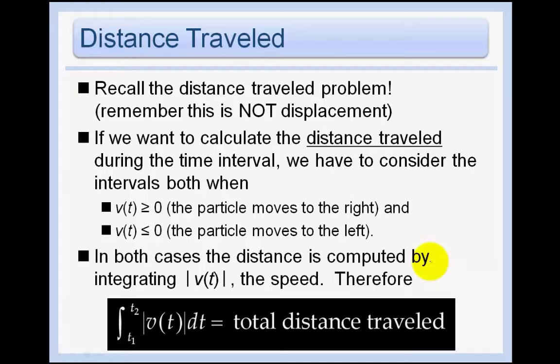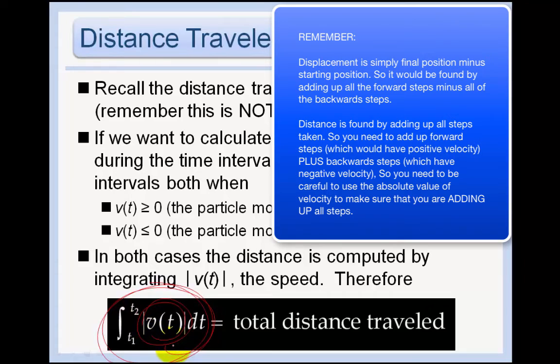Recall that the distance traveled is not the same as displacement. If we want to calculate the distance traveled during the time interval, then we have to consider the intervals when it's moving forwards and backwards. And we've done this a bunch of times. But an easy way to now think of it, now that we know formally the antiderivative and the notation, what we want to do is we want to take the absolute value of velocity, take the antiderivative of the absolute value of velocity, because basically what you want to do is make everything that was negative into positive. So you add up all of the distances instead of sometimes adding and sometimes subtracting.